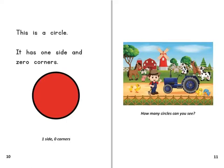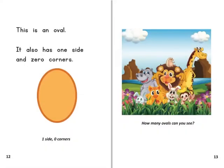This is a circle. It has one side and zero corners. This is an oval. It also has one side and zero corners.